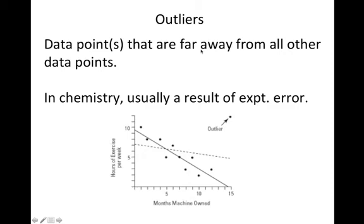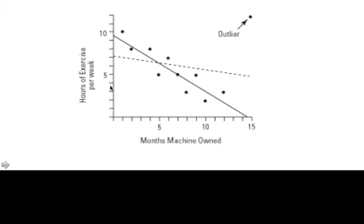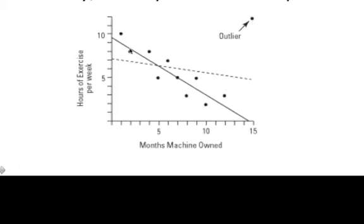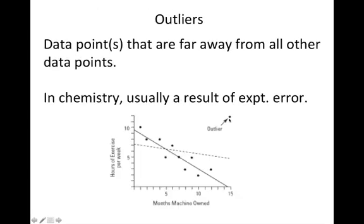One other issue with data fitting is the presence of outliers. An outlier is a data point that lies far away from all the other data points in the trend. So, for example, here's the data that show the number of hours that somebody would exercise per week once they own an exercise machine for a certain number of months. You can see that there's a negative correlation here, which means that the longer somebody owns a machine, the less likely they are to exercise on it. However, you can see that there is here a data point that's far away from the trend. The trend goes this way, but this data point is so far away from the rest of the data points. So this is what we consider an outlier. So generally speaking, in chemistry, an outlier is usually a result of an experimental error. So we generally remove outliers from our data set.